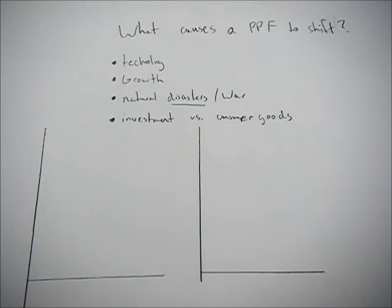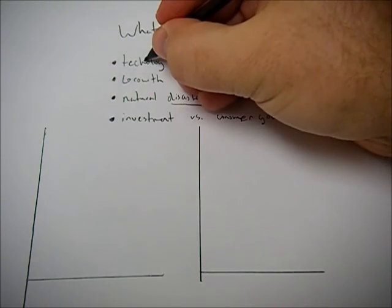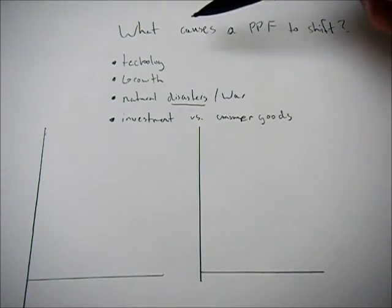Hello. This movie is going to go over what causes a PPF to shift. So you've seen the other movies on production possibility curves, you understand that. But what can cause them to shift? So I've gone through a brief list and I'm going to show what happens.